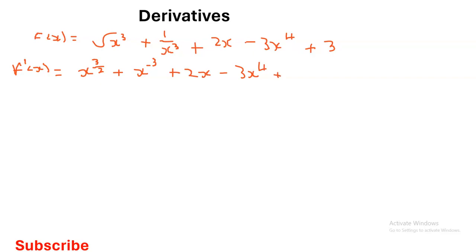Now I've got everything as exponents, so it's easy to find the derivatives. Applying the power rule: the first term gives 3 over 2 times x to the power of 3 over 2 minus 1. The second term gives negative 3 times x to the power of negative 3 minus 1.